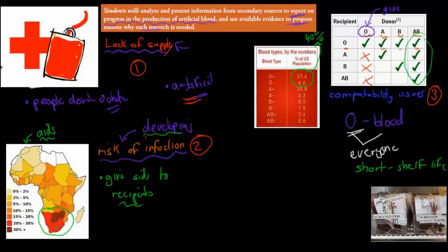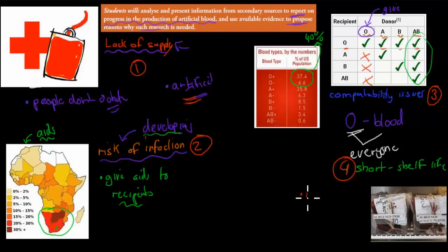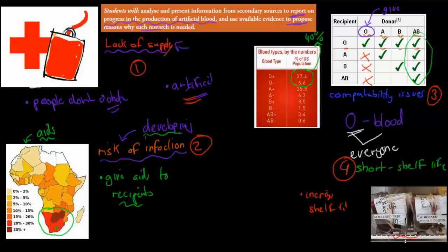Another reason is the short half-life of blood. Red blood cells do not last long. But if we can make artificial blood, we might be able to increase that shelf life — meaning how long it can last stored on a shelf. After a couple of months, donated blood will no longer be usable. But if we can make artificial blood that lasts longer, we can store it and have it available for quite some time.